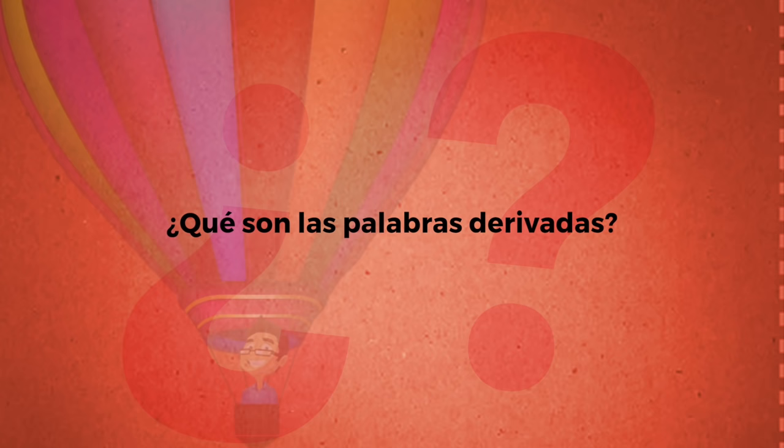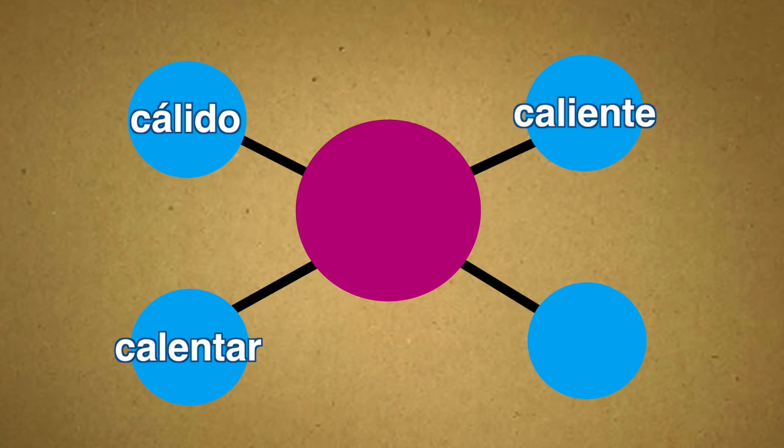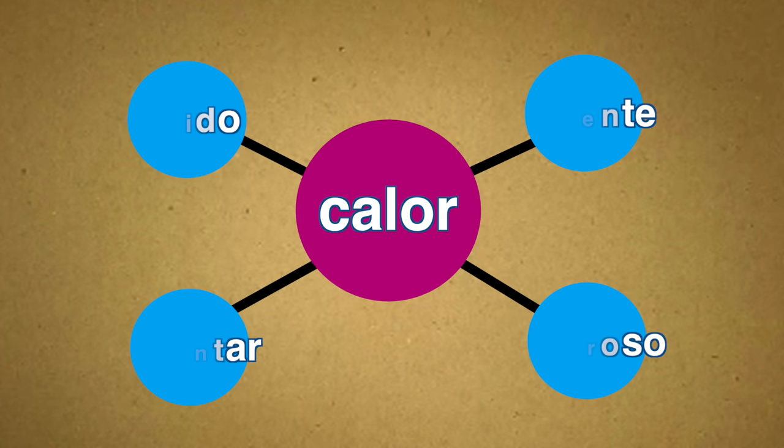¿Qué son las palabras derivadas? Las palabras derivadas son aquellas palabras que se han formado a partir de otra palabra, que denominamos palabra primitiva. En este caso, cálido, caliente, caluroso y caluroso son palabras derivadas de la palabra primitiva calor.